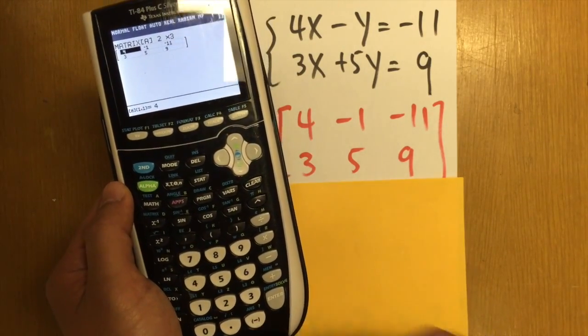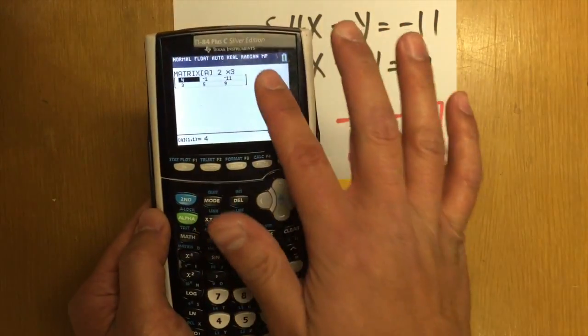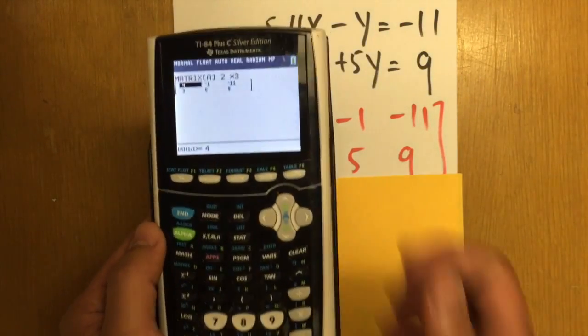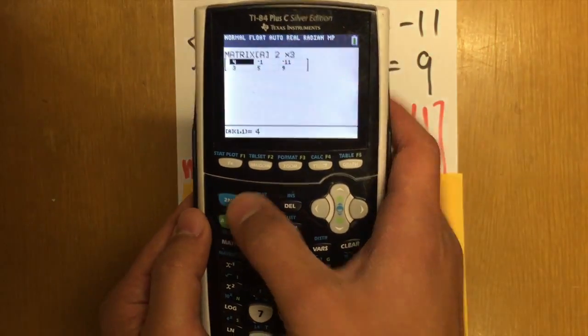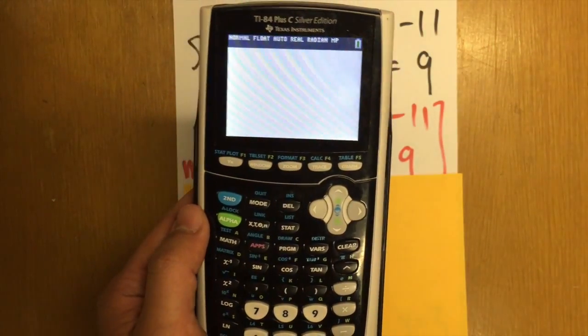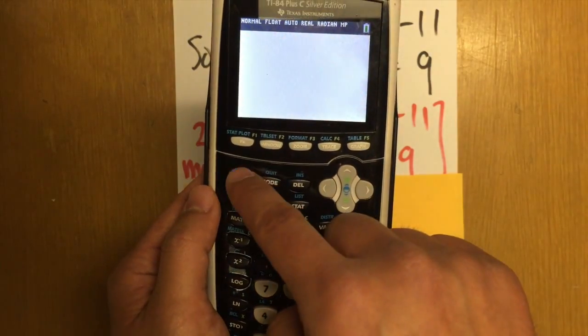And be sure to use this for negative sign. All right, so we have a matrix A right here already. And this is how we have to do it. We have to go back home first. So hit second and quit. We have to get back to the home page.